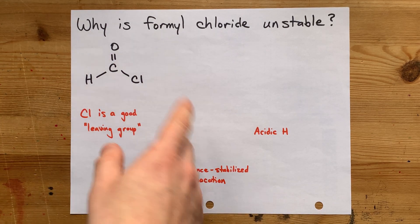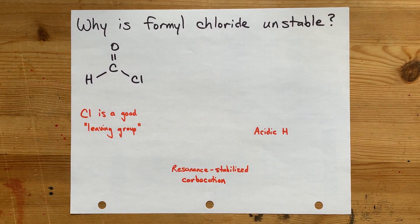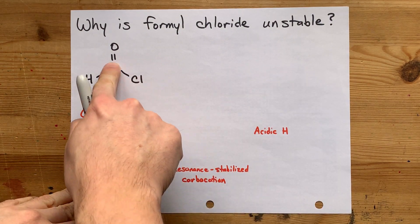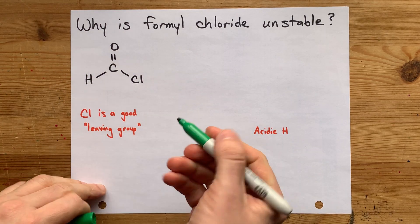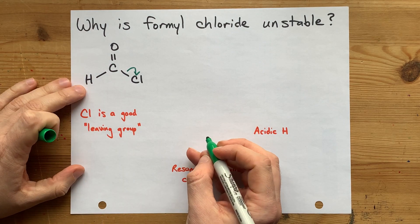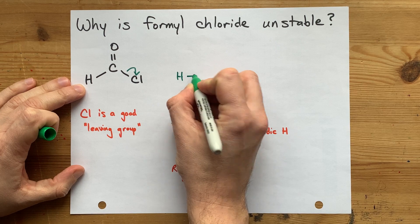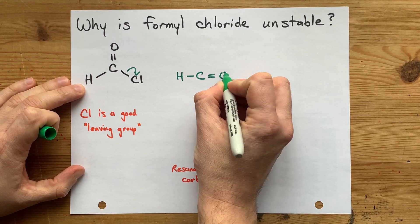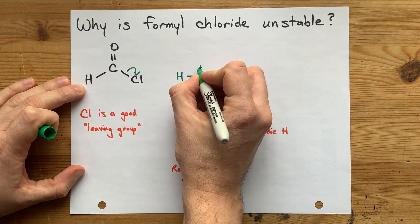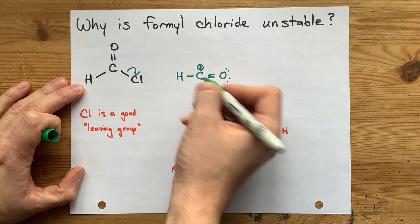Well, it has to do with the carbocation that's made when this Cl falls off here. Here this Cl is able to fall off of the molecule because it's a good leaving group. It can take that bonding pair of electrons with it. So you end up with the H connected to the C still. That C is still connected to the oxygen. The oxygen has two lone pairs and that carbon now has a positive formal charge. It is a carbocation.